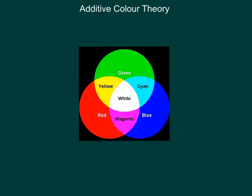You can see that if you combine green and blue, you get a color called cyan. If you combine blue and red, you get magenta. And green and red gives you yellow. If you've ever set up the colors on a TV screen or a computer monitor, you might recognize yellow, cyan, and magenta as the colors you're used to seeing there.